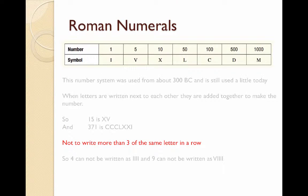We're not allowed to write more than three of the same letter in a row. So 4 cannot be written as IIII and 9 can't be written as VIIII.